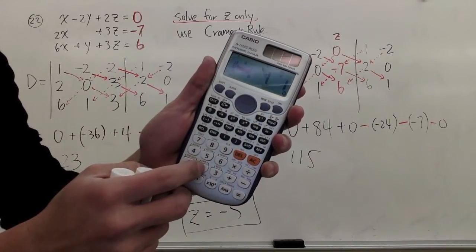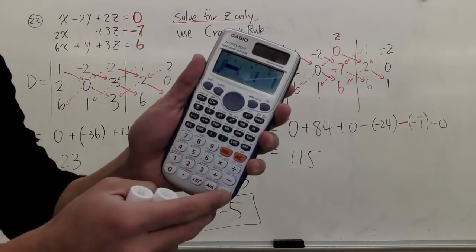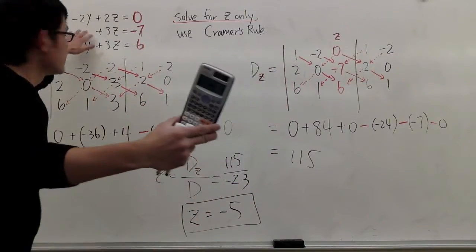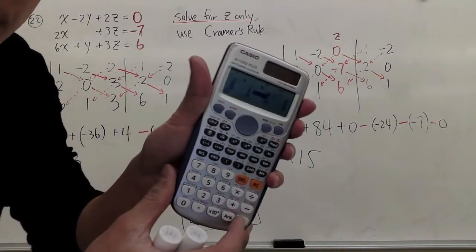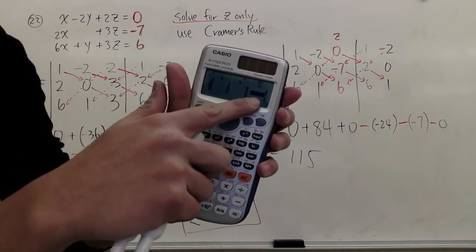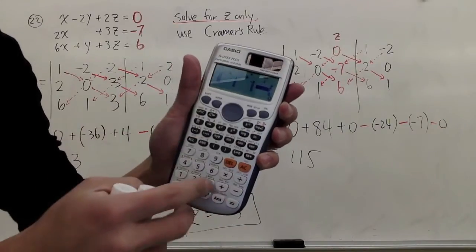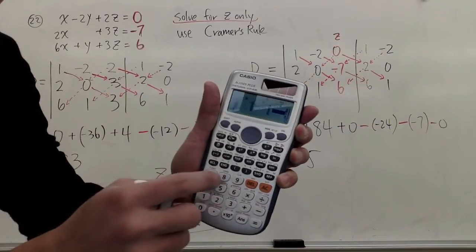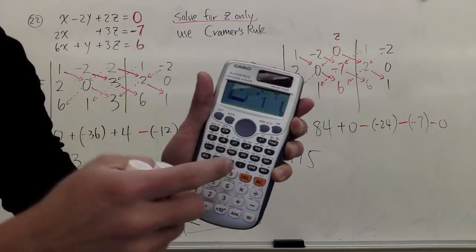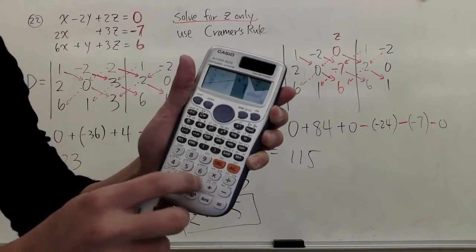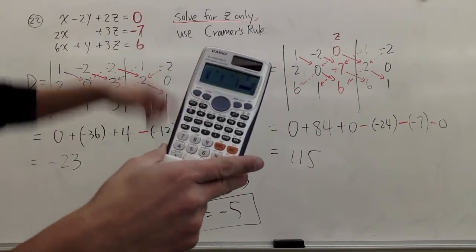And for the second row, the x is 2, equals, the y is 0, the y is 0, so equals. And for the third one, for the z is 3. And the last number, which is negative 7, equals. And the last part, we have 6, 1, 3, and 6.